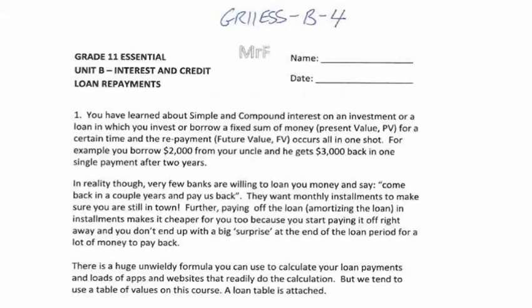So you paid two hundred and twenty-six thousand five hundred dollars in interest to get your three hundred thousand dollar loan. When you borrow money from a bank, they want to see you pay it back monthly. That's good for two reasons: the bank knows you're still in town, and it's good for you because you nibble away at the debt and pay less interest than if you waited until the very end of the loan.